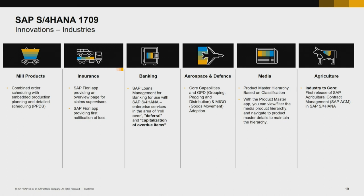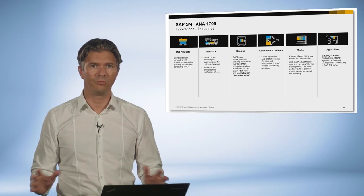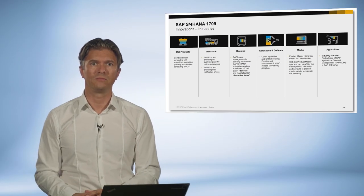All these are covered by different apps. One last example: SAP Agriculture Contract Management is released with S4HANA 1709 as part of our effort to simplify the ERP landscape.